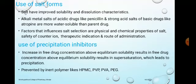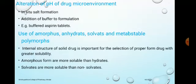Use of precipitation inhibitors increases free drug concentration above the equilibrium solubility, resulting in supersaturation, which leads to precipitation. This can be prevented by using inert polymers such as HPMC, PVP, PVA, and polyethylene glycol (PEG).